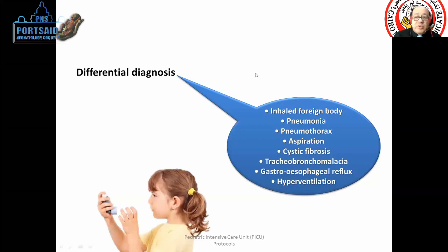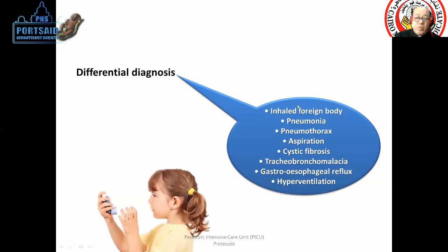Other differentials include aspiration — aspirated milk in infants. Cystic fibrosis is uncommon but should be considered, with family history and long history of symptoms. Tracheobronchomalacia is uncommon. Reflux is present in infants with recurrent wheeze. Hyperventilation is also possible.